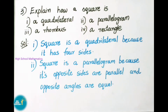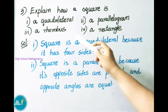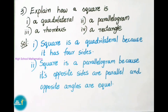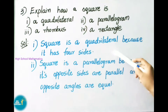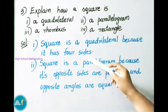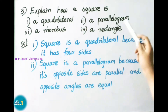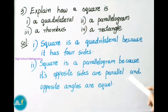Question number 3: Explain how a square is a quadrilateral, a parallelogram, a rhombus and a rectangle. Square is a quadrilateral because it has 4 sides. Square is a parallelogram because its opposite sides are parallel and opposite angles are equal.